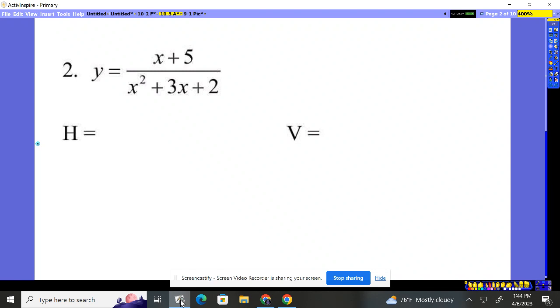Problem number two, we want to find the horizontal and vertical asymptotes of this equation. Well, if you remember, horizontals, that catchy phrase, Bobo Botton eats DC.